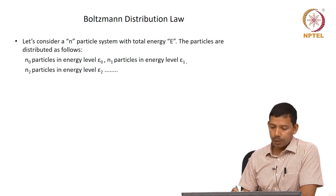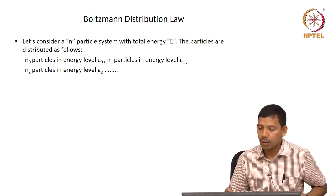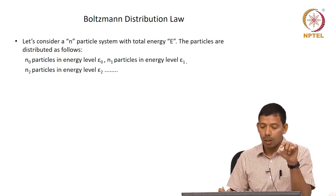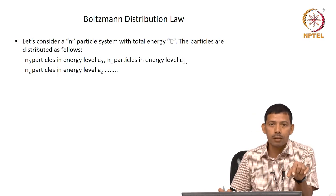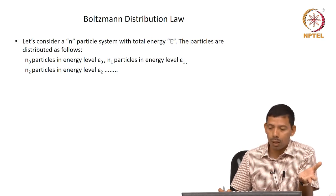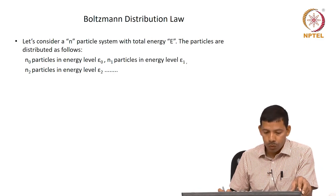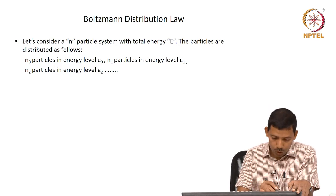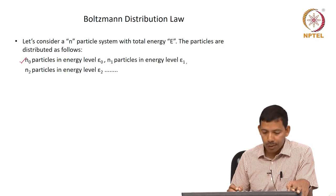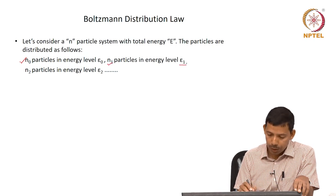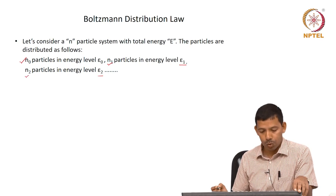Let us consider an N-particle system with total energy capital E. The total energy is defined as capital E, and energy for individual states is defined as epsilon. For the ith state the energy is epsilon i. We have N₀ particles in energy level epsilon 0, N₁ particles in energy level epsilon 1, N₂ particles in energy level epsilon 2, and so on.